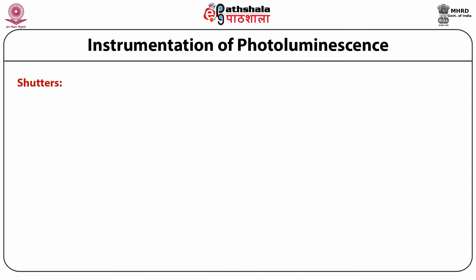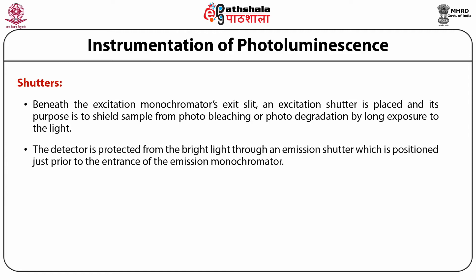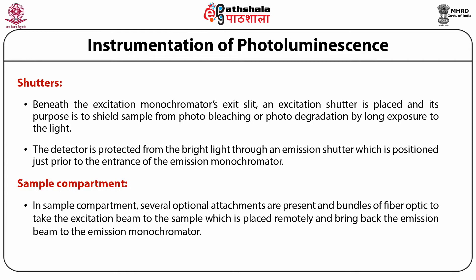Next is the shutter. Beneath the excitation monochromator exit slit, an excitation shutter is placed and its purpose is to shield the sample from photobleaching or photo degradation by long exposure to light. The detector is protected from bright light by an emission shutter positioned just prior to the entrance of the emission monochromator. In the sample compartment, several optional attachments are present, including bundles of fiber optics to take the excitation beam to the remotely placed sample and bring back the emission beam to the emission monochromator.